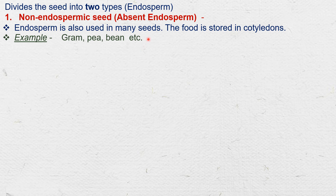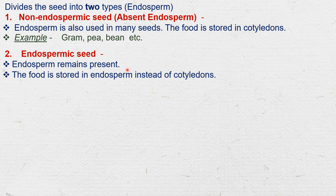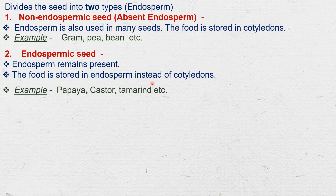The second type is the endospermic seed. In some seeds, endosperm remains present. In these seeds, the food is stored in the endosperm instead of cotyledons — these seeds are called endospermic or albuminous seeds. For example, papaya, castor, tamarind, etc.